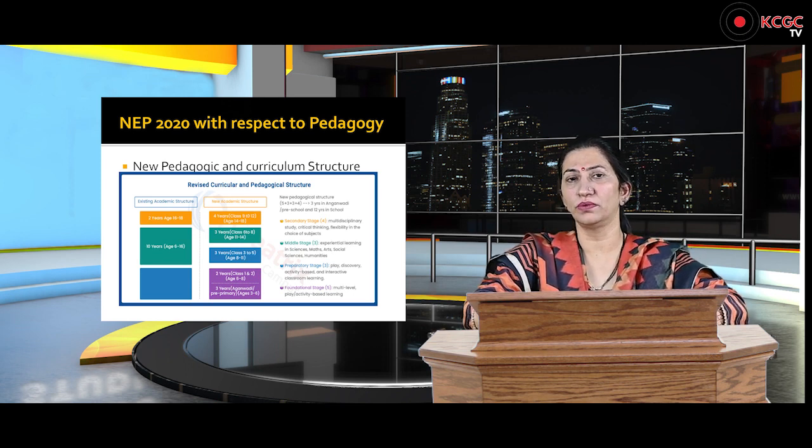If the child is not able to get a white-collar job, at least they should feel capable enough to sustain themselves. From class ninth begins the secondary stage, which goes up to class twelfth. The age group will be from 14 to 18 years. A very important initiative taken by the government here is that at this stage, children have been given flexibility with regard to selection of subjects.